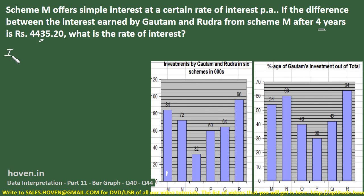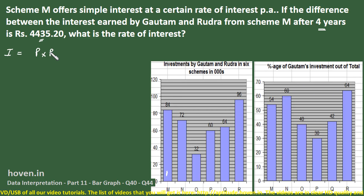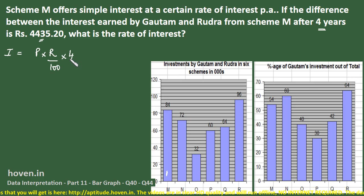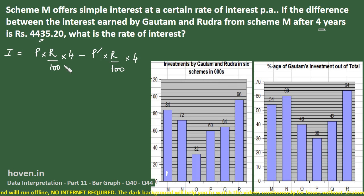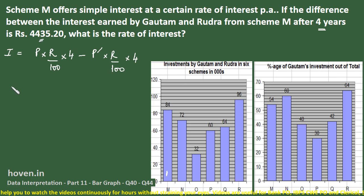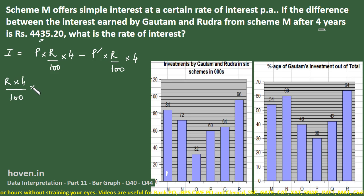The formula for the difference of interests: take the principal of the first friend, multiplied by rate divided by 100, multiplied by 4 (time in years), minus the same expression for the second friend — same rate and time, but different principal. Taking r/100 common gives: (r × 4)/100 × (difference of the two principals).